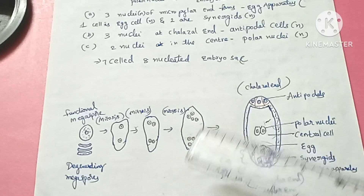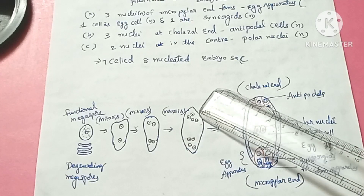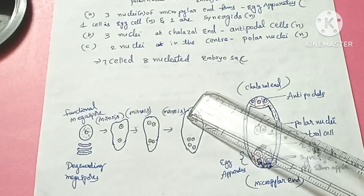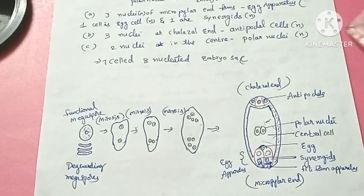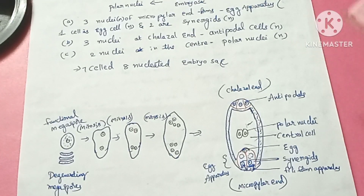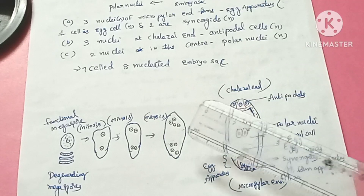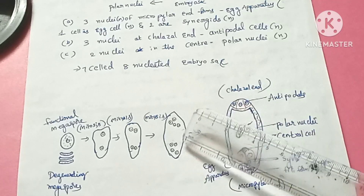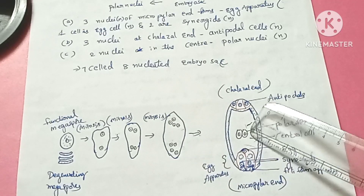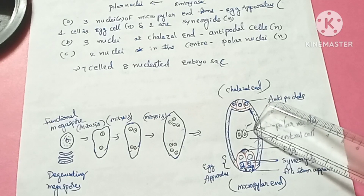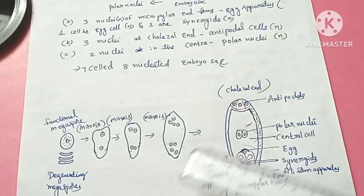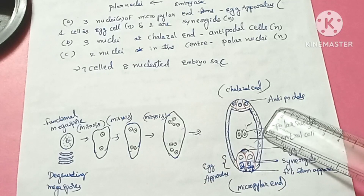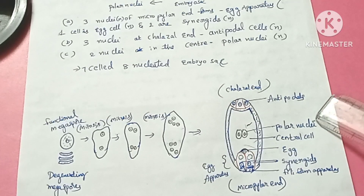There is then a further mitosis, and finally eight megaspore nuclei are produced — four on one side and four on the opposite side. The embryo sac reaches an 8-nucleated condition. One nucleus from each group of four moves to the center, where they form the polar nuclei of the central cell.